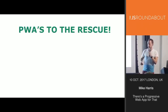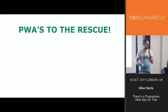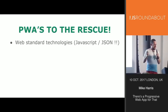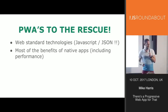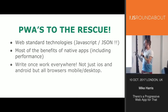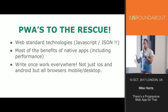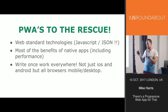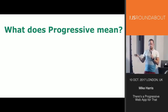This is where Progressive Web Apps come in. One of the best things about progressive web apps is they use web standard technology - they use JavaScript. They have most of the benefits of native apps including performance. Write once, work everywhere - everyone is hopefully building responsive websites. You build it once and it should work everywhere, with one team and maybe a few tweaks for mobile.